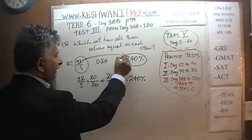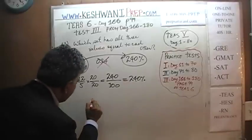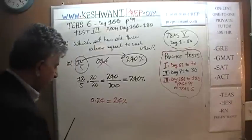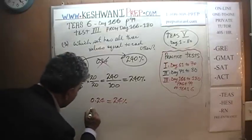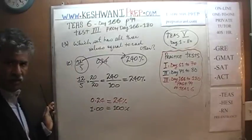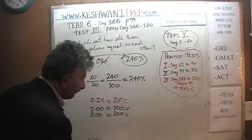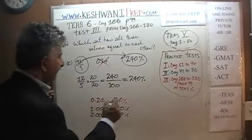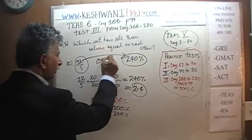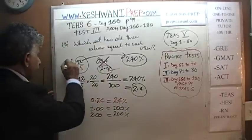12 over 5 is indeed 240%, but it is not 0.24 expressed in decimal. 0.24 is 24 percent — we want 240 percent. For example, 1 in decimal equals 100%, and 2.0 equals 200%. Therefore, 240% expressed in decimal should have been 2.4, not 0.24. Answer choice C is also wrong.